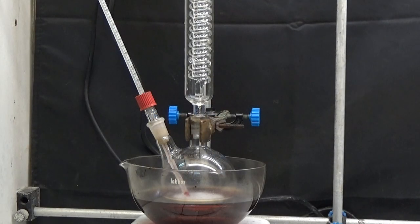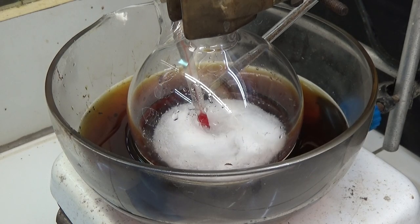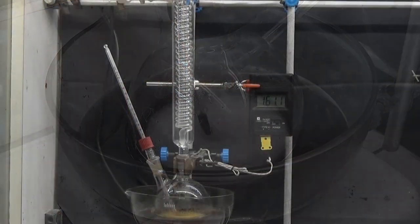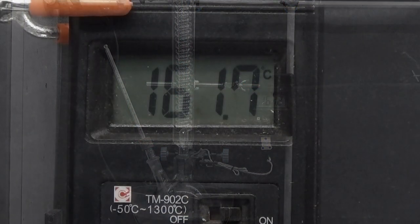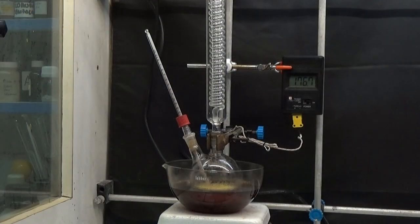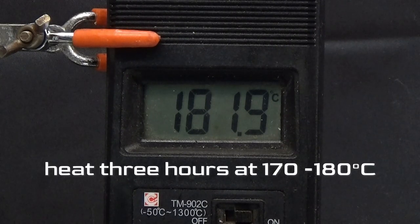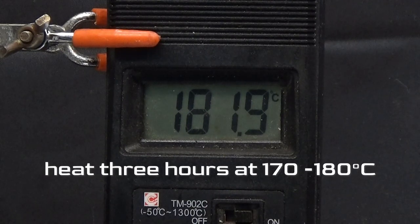Put a reflux condenser protected from moisture by a calcium chloride tube. Heat to reflux with an oil bath at 160 degrees for one hour. Continue heating for three hours between 170 to 180 degrees.